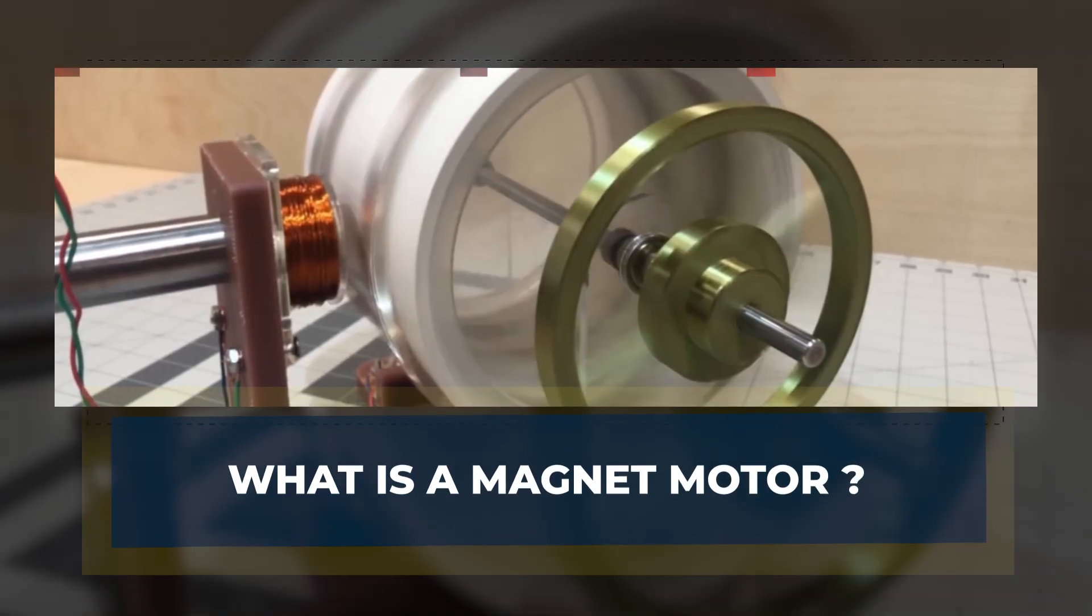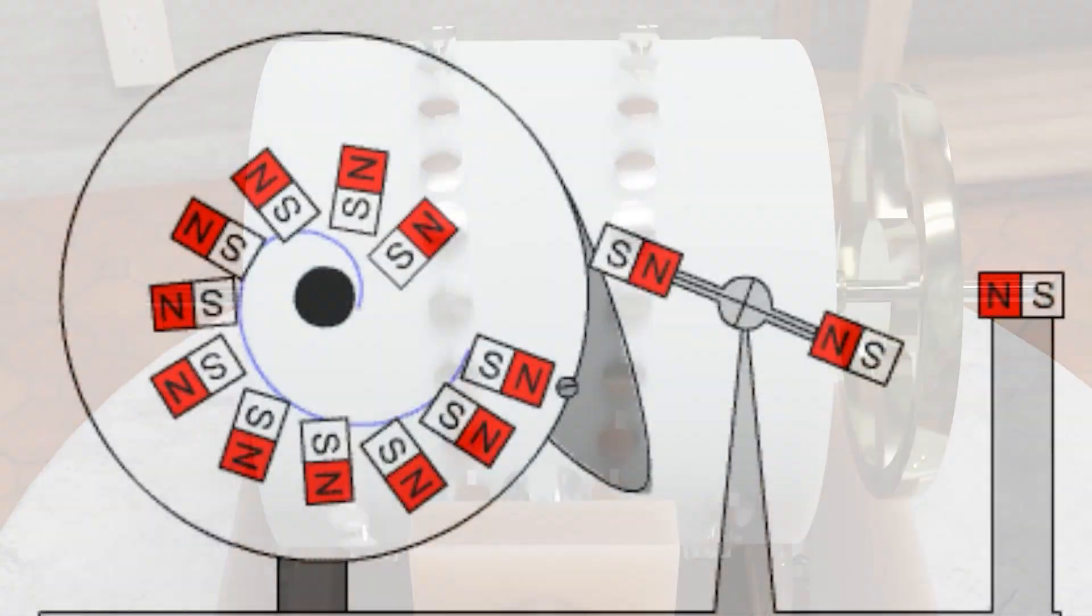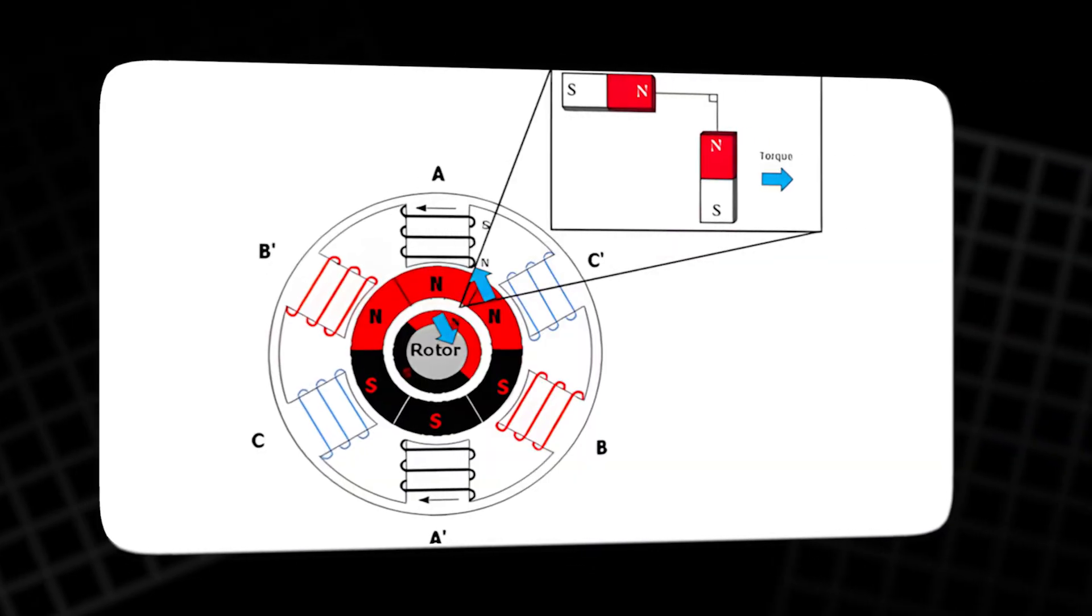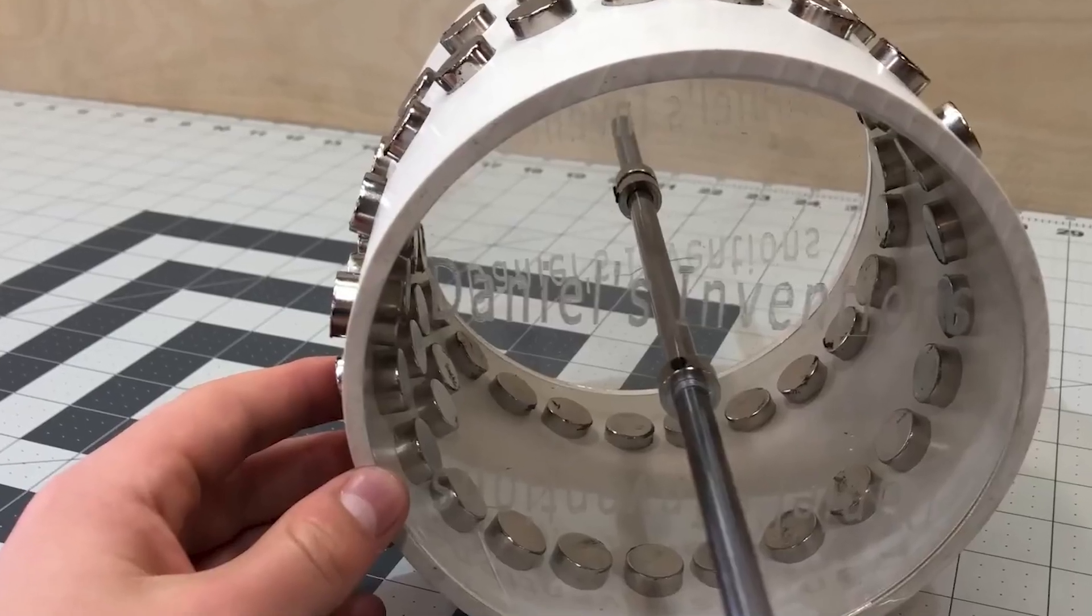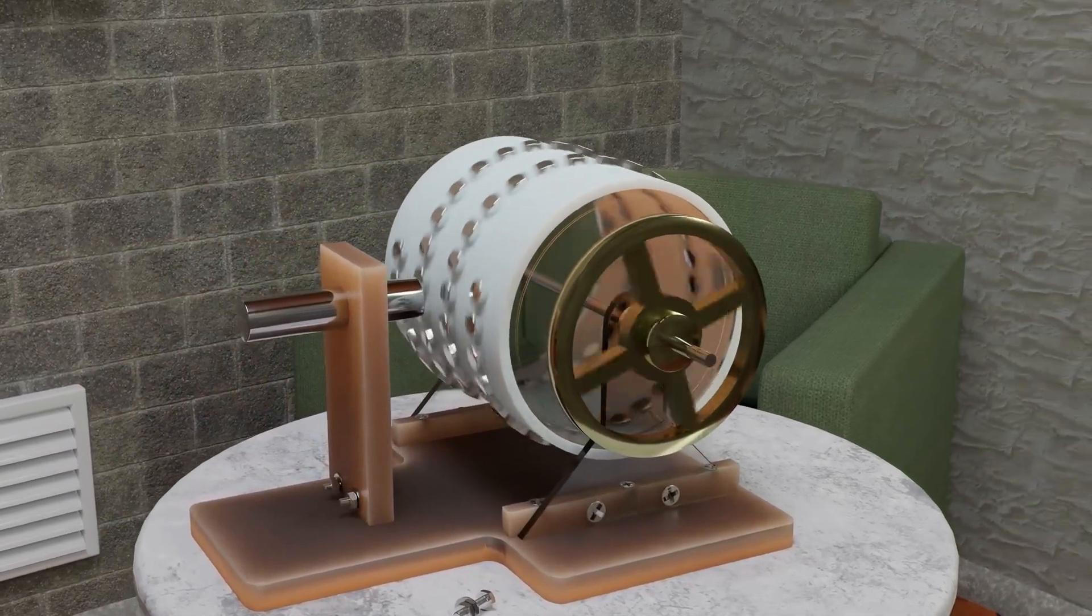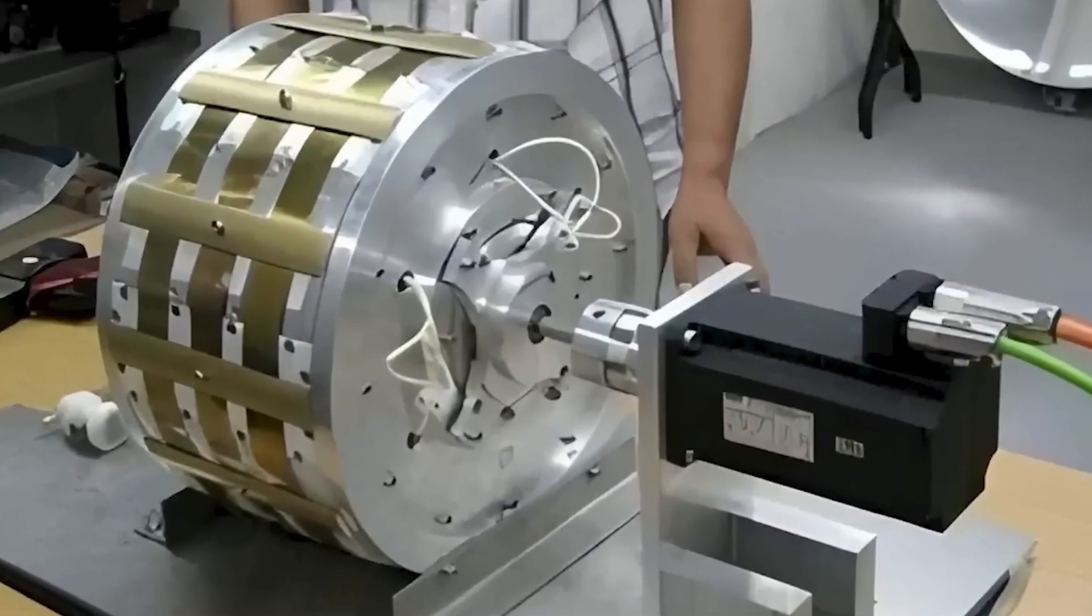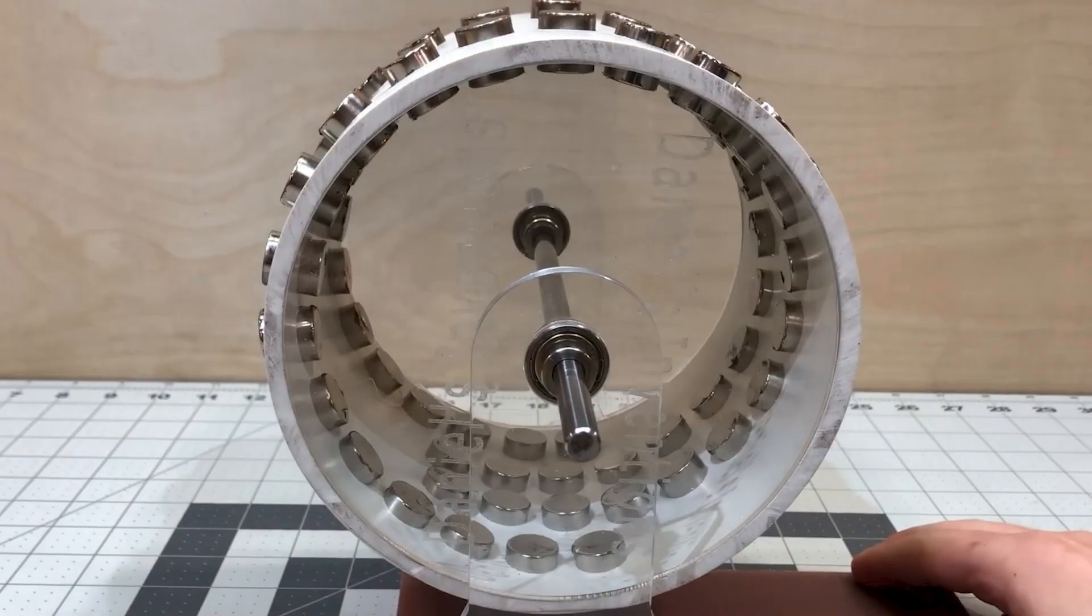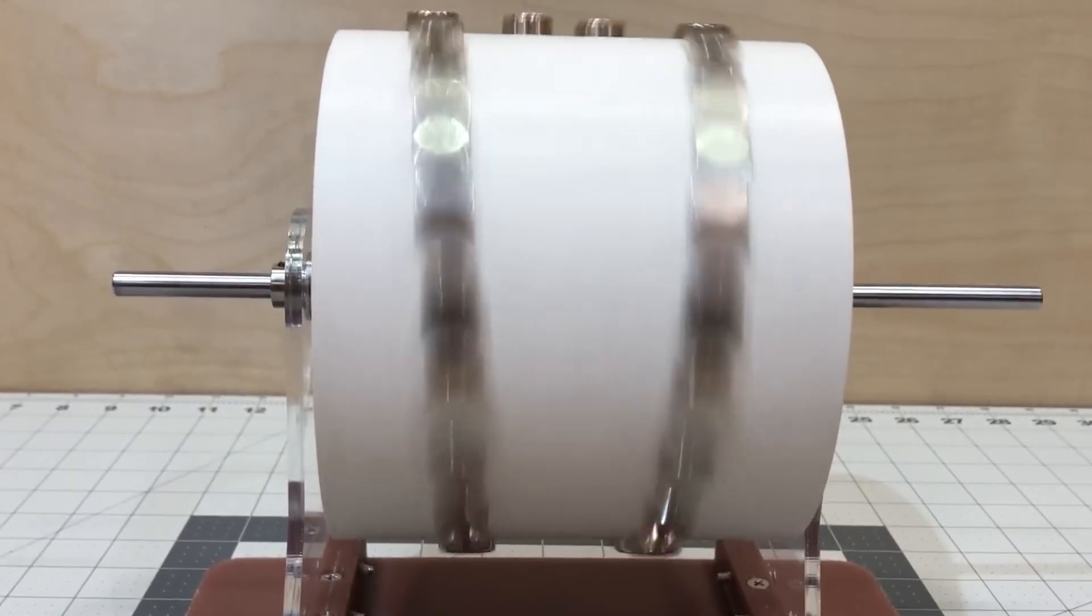What is a magnet motor? Magnet motors are devices that claim to generate electricity by harnessing the natural repulsive forces between magnets. The idea behind a magnet motor is deceptively simple. By arranging magnets in such a way that they repel each other, the resulting motion can supposedly power a generator and produce free electricity. This process is believed to create what's known as perpetual motion, where the system would continue to run indefinitely without any external power source. This concept, however, is based on a key challenge to the laws of physics.